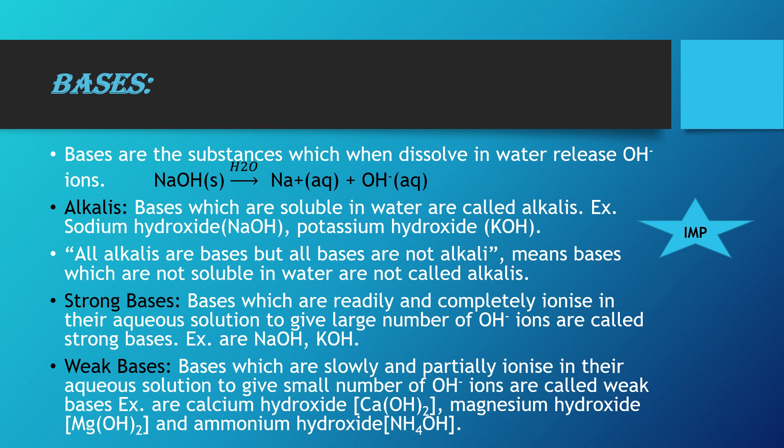Next are strong and weak bases. Like strong acids, bases which are readily and completely ionized in their aqueous solution to produce a large number of hydroxide ions are called strong bases. For example, NaOH and KOH. If you take 100 molecules of NaOH and dissolve them in water, they produce 100 hydroxide ions — that means complete ionization of sodium hydroxide, hence it is a strong base.